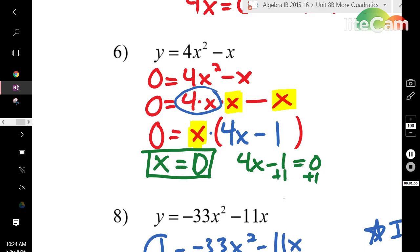Add 1, add 1. 4x equals 1. Divide both sides by 4. And x equals 1 fourth. And those are your two zeros.